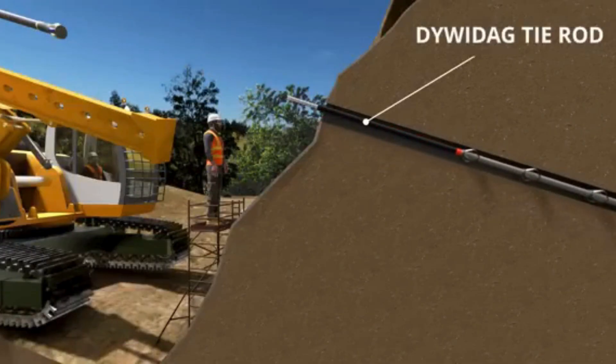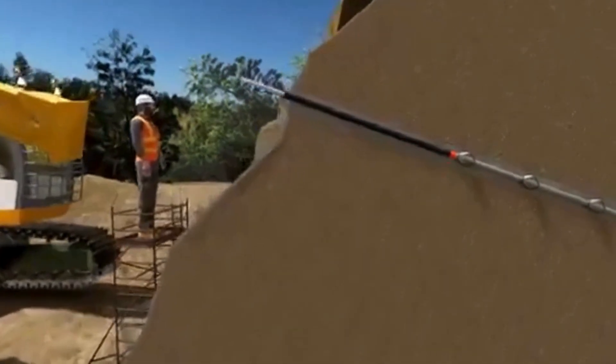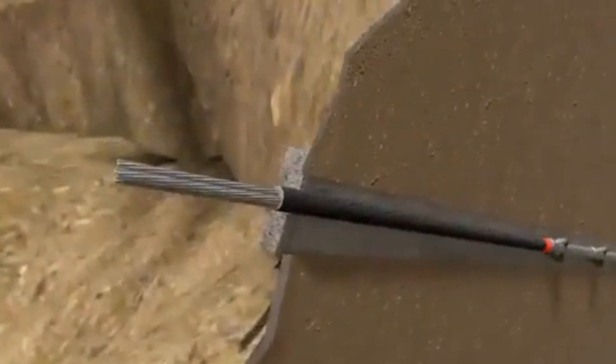In this project, they used DiviDAG tie rods. Now it's time for grouting. Once the grout is hardened, a block is kept on the rod.